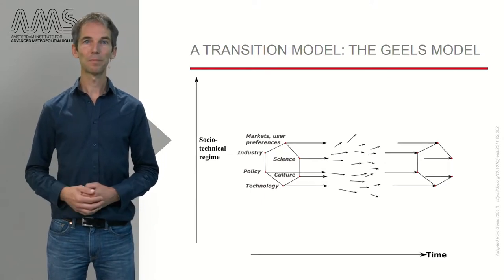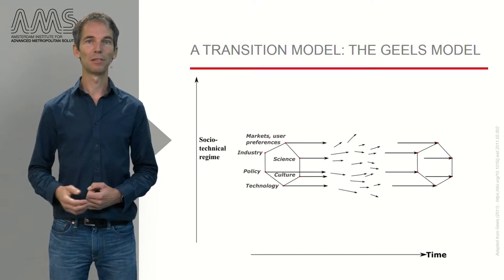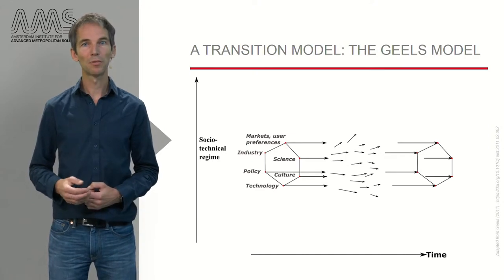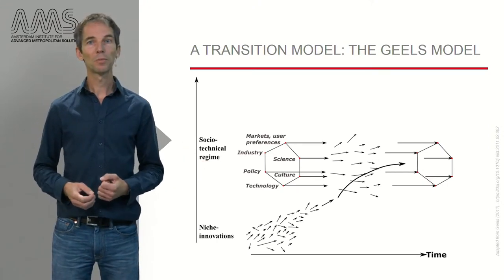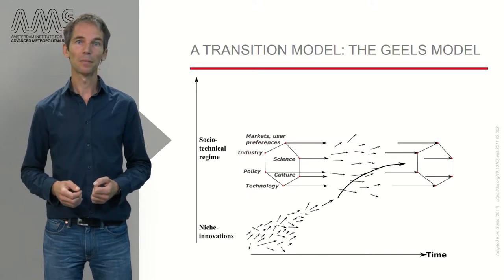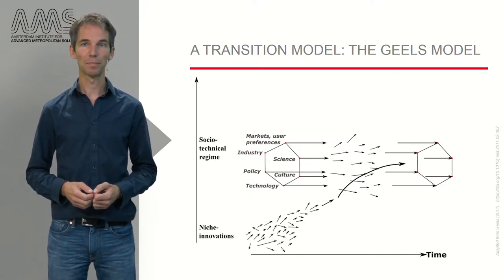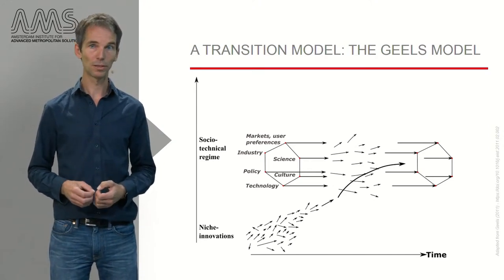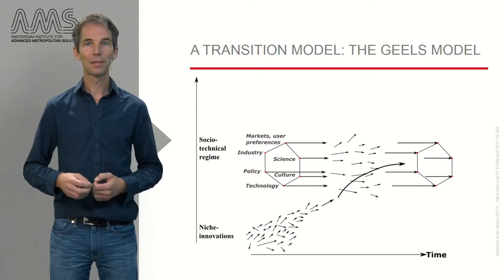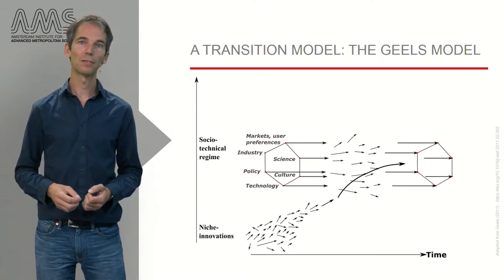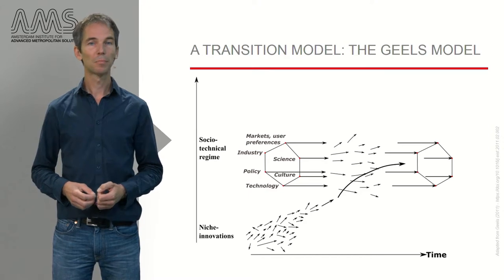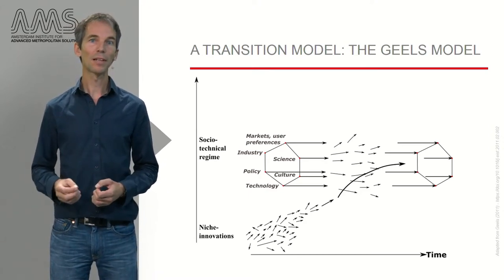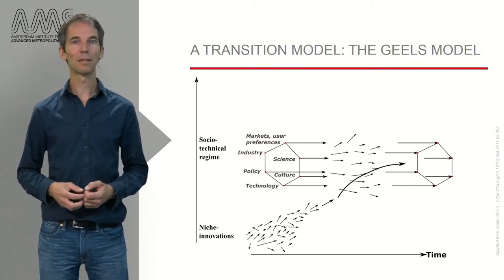Now if this depicts a transition, how does it come about? Here we add the concept of niche development. According to this model, a transition is fueled by innovations that come from outside the current regime and that originate in niches. These innovations may disturb one or more dimensions of the regime. It is presented in the model as the disturbance of arrows midfield. So transitions are believed to be initiated in so-called niches, bottom left in the graph. These are protected spaces in which multiple actors try out and learn about novelties. Urban living labs are a good example of such niche developments. Protection is needed because whatever happens in the niches is not aligned with the current regime and cannot easily benefit from economies of scale.